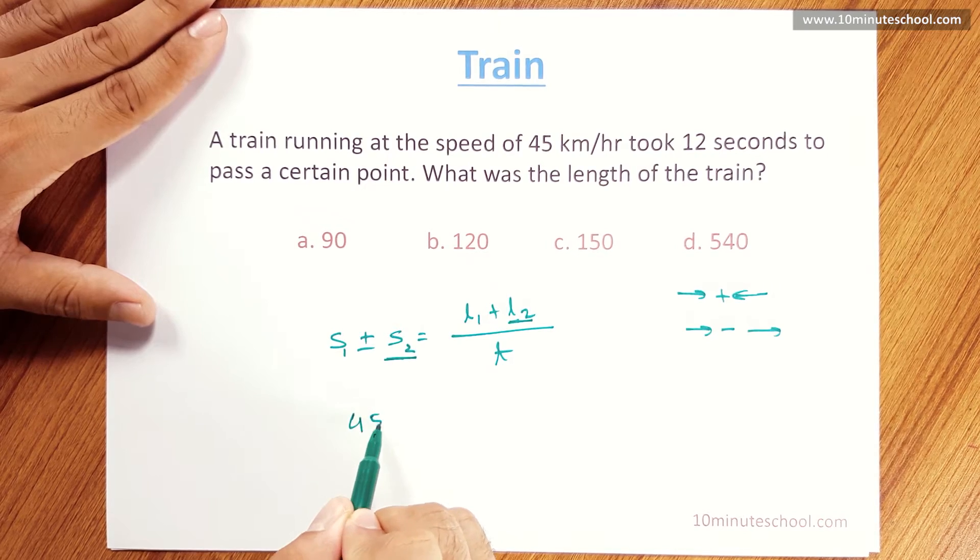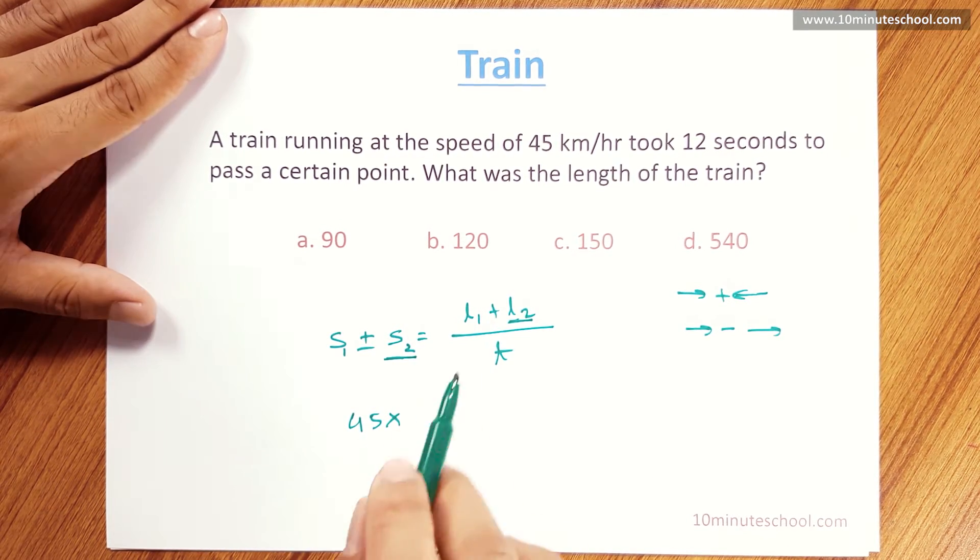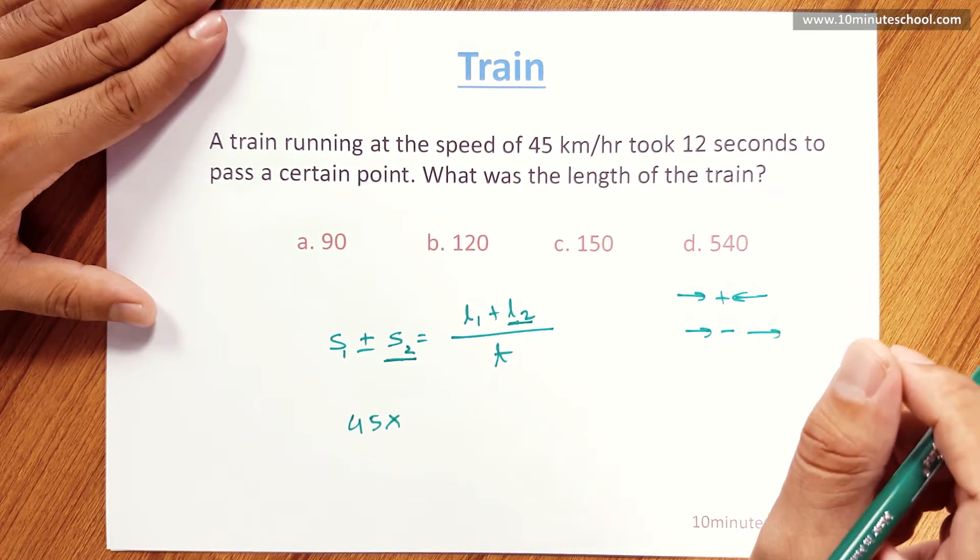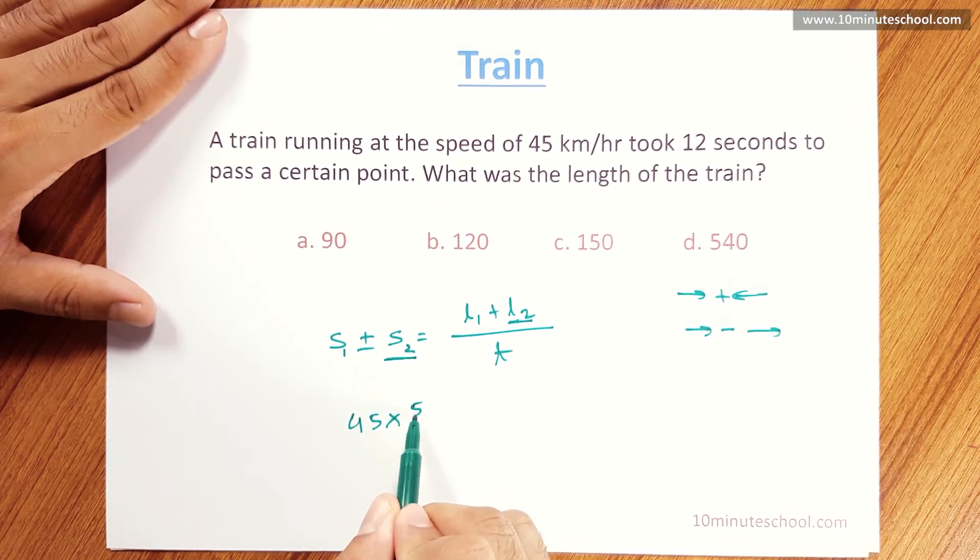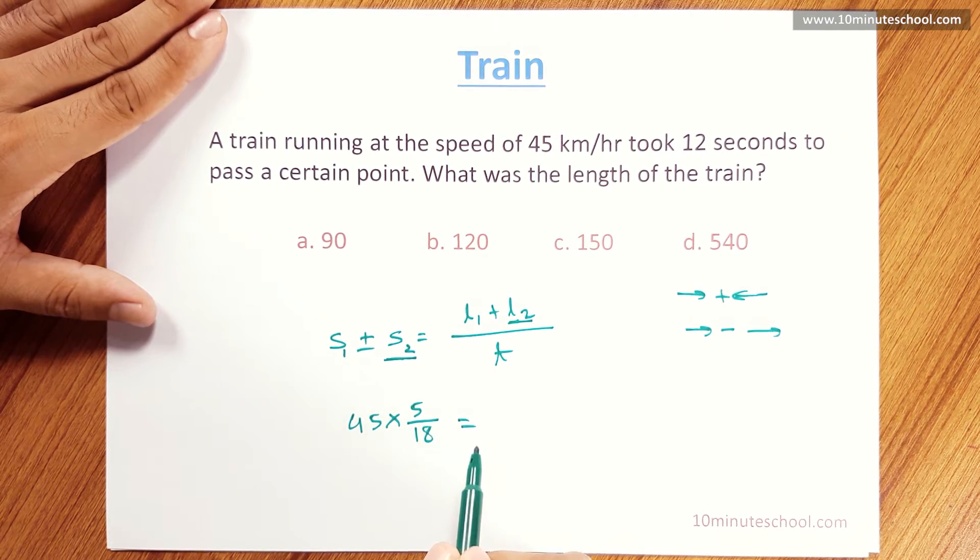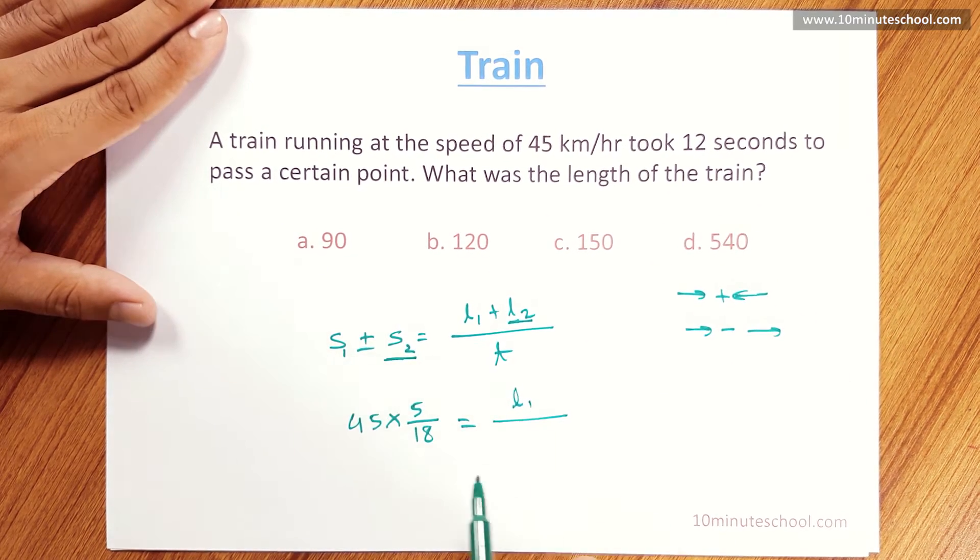So 45 km per hour. We have to convert 45 km per hour. We have to find L1. What is the length of the train? What was the length of the train? We have to know L1. We have 12 seconds.